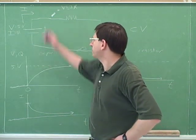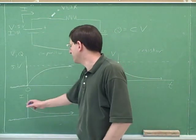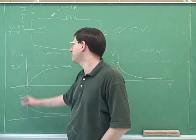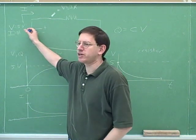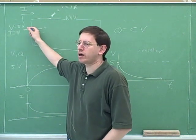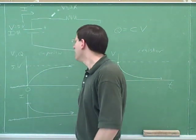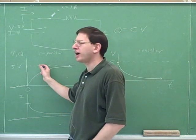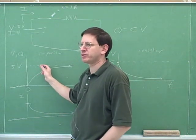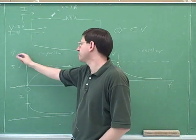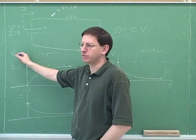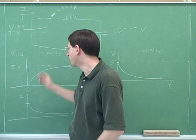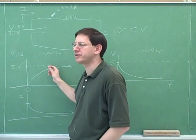That's why originally, when we closed the switch, there was a very strong current. Originally, it was very easy for the battery to send lots of water, so to speak, towards the capacitor. But over time, more and more water got piled up. Remember, this also stands for Q, which is the charges or the water in our analogy.